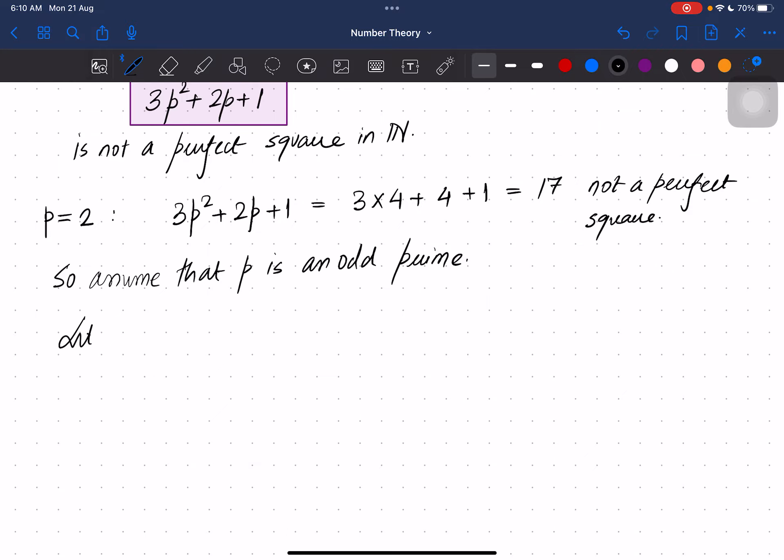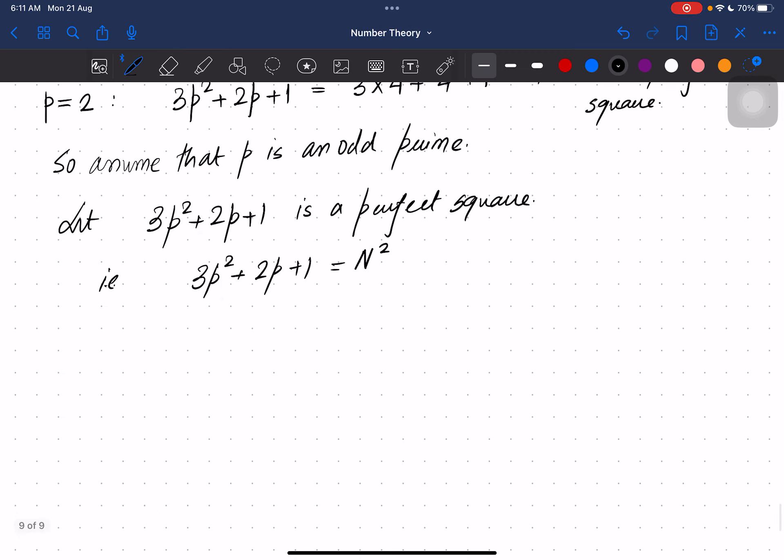Let's say that this is a perfect square, so I can express it equals to some capital N². Because it is a perfect square. Now if I send one to the other side, we have 3p² + 2p = N² - 1, that can be factored into (N-1)(N+1).